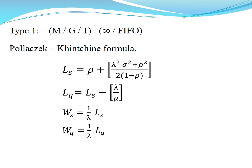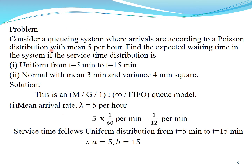Consider a queuing system where arrivals follow a Poisson distribution with mean 5 per hour. Find the expected waiting time in the system if the service time distribution is: (a) uniform from t = 5 minutes to t = 15 minutes, and (b) normal with mean 3 minutes and variance 4 minutes squared. Since arrivals are Poisson and service time has a general distribution, this falls under Type 1 — the M/G/1/infinity/FIFO queuing model.